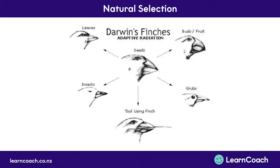Now for one more example before we go through what you need to know — a common thing that comes up is Darwin's Finches. Charles Darwin, who came up with the idea of natural selection and evolution, noticed on an island he visited that there was an original finch, and that going around the island to different places he saw different variations of these finches.